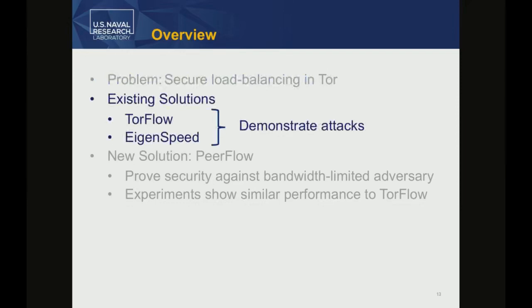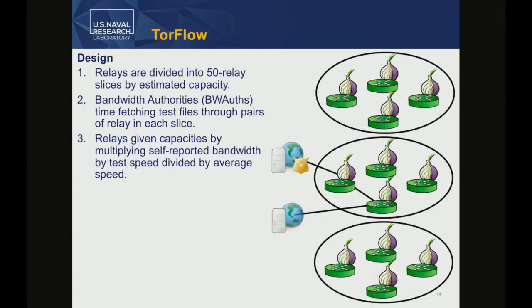I'm not the first person to recognize this, and other people have looked at it including the TOR project itself. There are existing solutions. The first system, TorFlow, is a system that TOR designed for better load balancing — primarily for performance reasons, to accurately measure relay speeds, with security as, at best, an afterthought. We demonstrate some attacks on these systems in this paper.